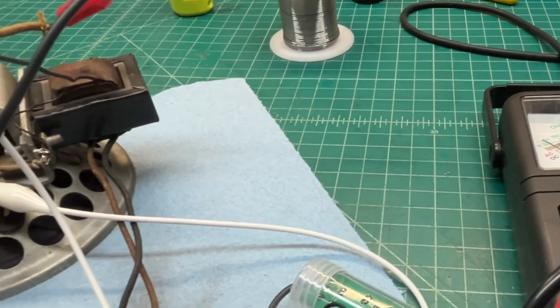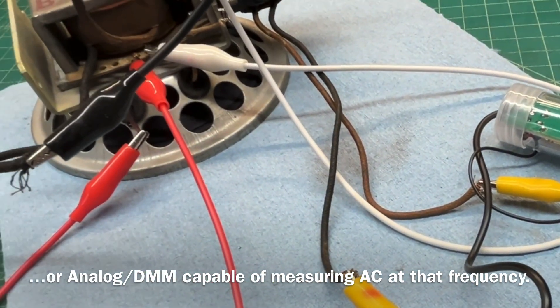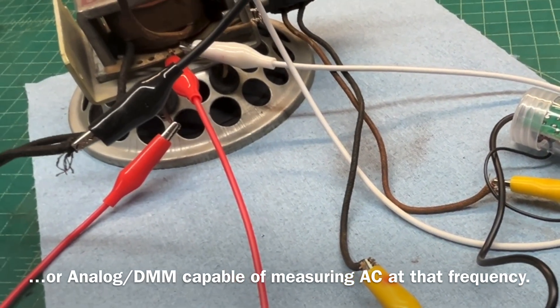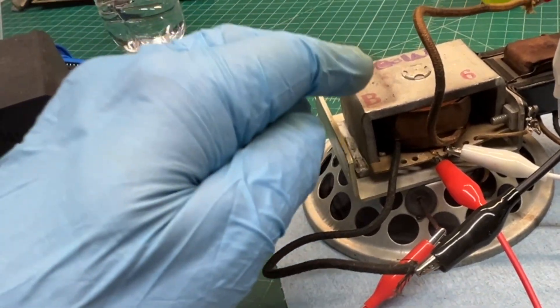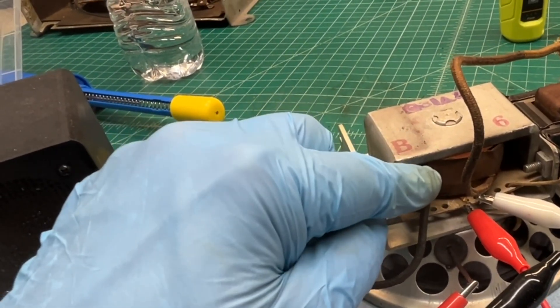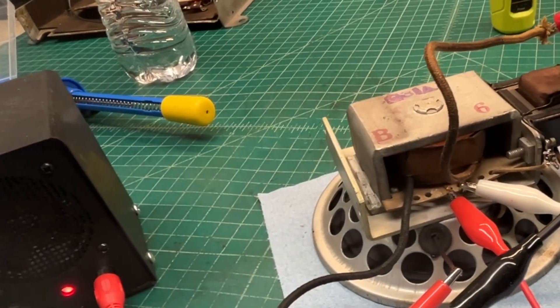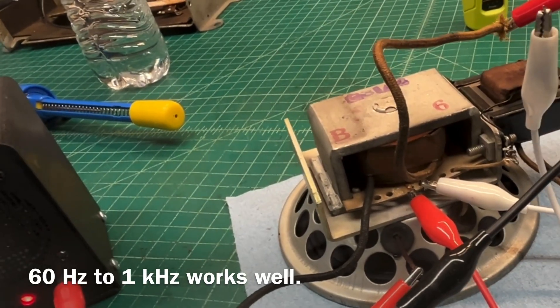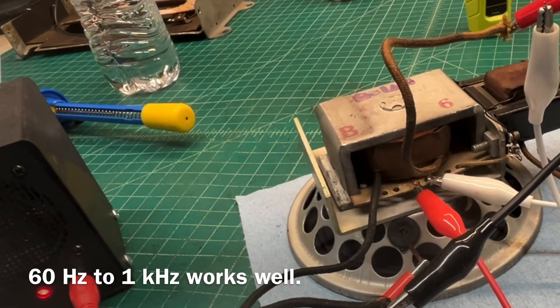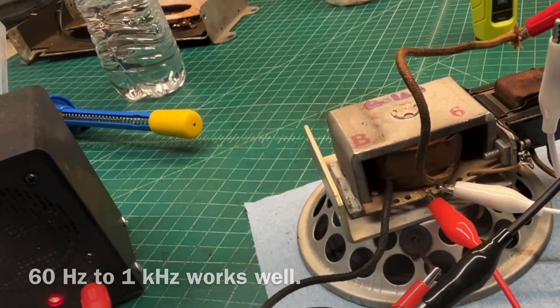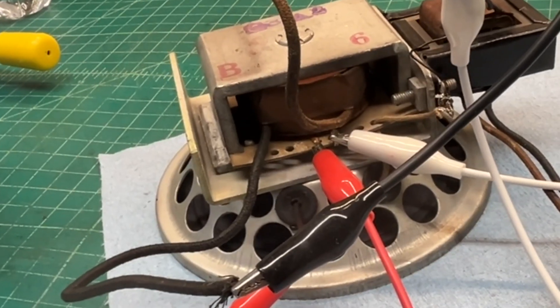And of course, you can substitute an O-scope, anything that will read the AC waveform. The frequency itself is not overly critical. Hum being induced from the field coil itself, which is energized. You could use a signal at 120 Hz. In this case, I'm going to demonstrate this at 1,000 Hz or 1 kHz. It's really not critical.